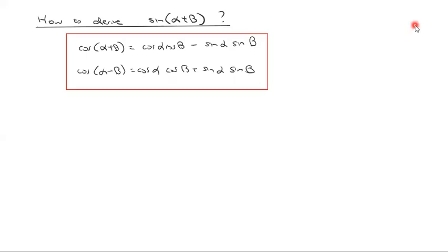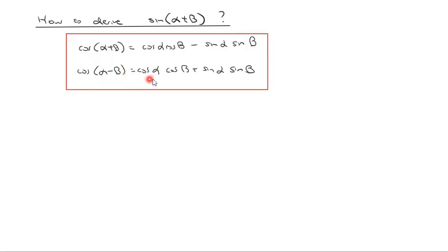The question now is how do we derive sine of alpha plus beta. At this point we already know these results: cosine of alpha plus beta is cos alpha cos beta minus sine alpha sine beta, and cosine of alpha minus beta is cos alpha cos beta plus sine alpha sine beta.